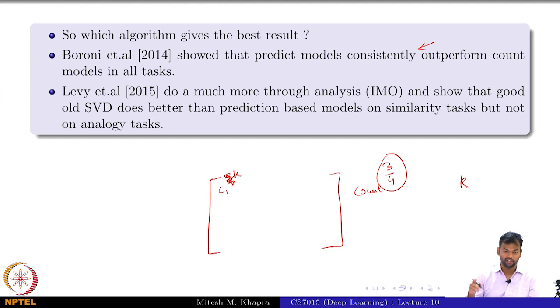SVD does as well as or even better than word2vec models for the similarity tasks, but not for the analogy task. The analogy task was the last task - brother to sister, grandson to granddaughter. In most cases we care about similarity, and in very few cases we care about analogy if you are doing NLP applications. So that means in most cases SVD would just be fine. That is what I said at the beginning.